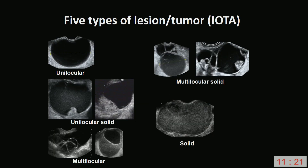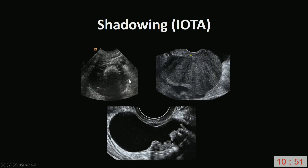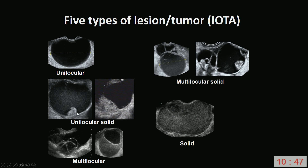When using the IOTA terminology, there are five types of tumour, and this is extremely important because if you don't get this right, the IOTA methods will not work in your hands. A unilocular cyst has one cyst locule, no septa, no solid components. A unilocular solid cyst has one cyst locule with solid components — a papillary projection or other solid component. A multilocular cyst contains septa but no solid components, and even a bilocular cyst is classified as multilocular in IOTA terminology.